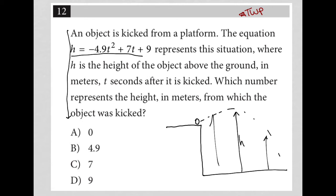H is the height of the object above the ground in meters, T seconds after it is kicked. Okay. Which number represents the height in meters from which the object was kicked? Oh, so which number represents just this?